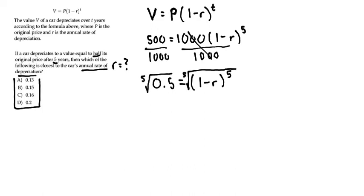Taking the fifth root of 0.5 using a calculator—if I do 0.5 to the 1/5 power—I get approximately 0.87.